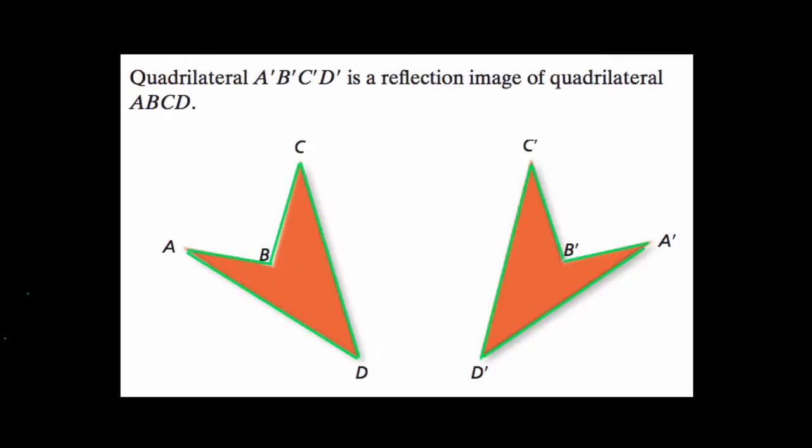In other words, what's the connection between points A and A prime, C and C prime, B and B prime, and the last pair D and D prime? What's the connection between the points on these shapes?